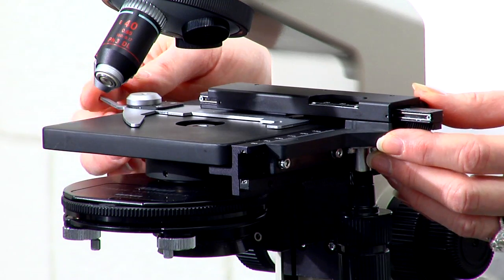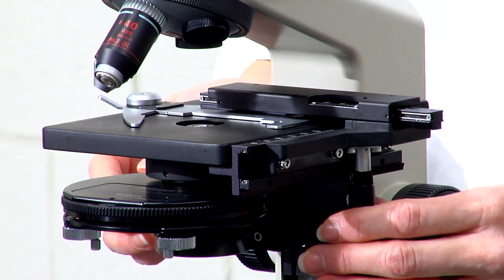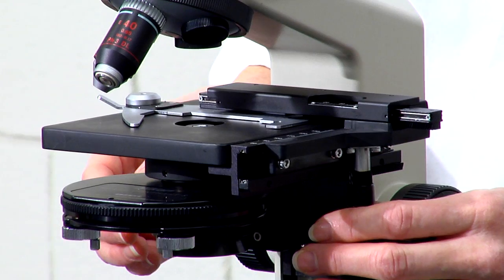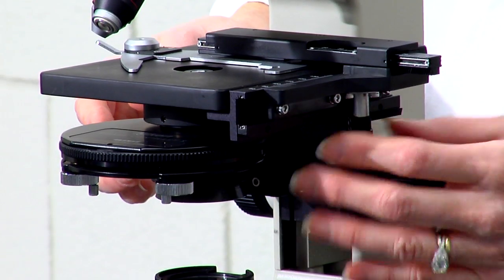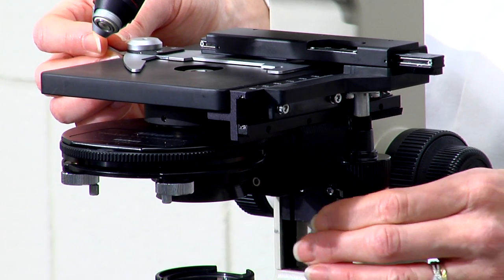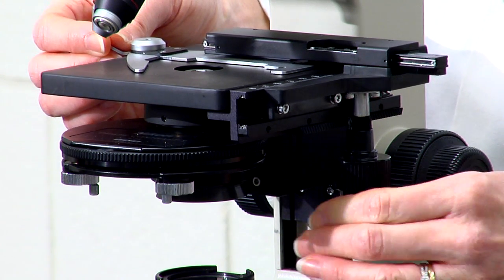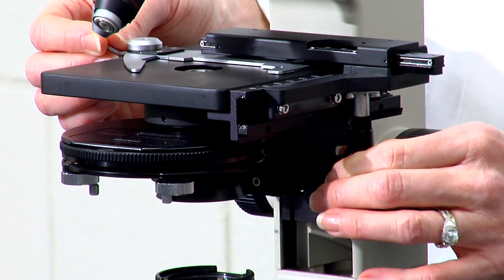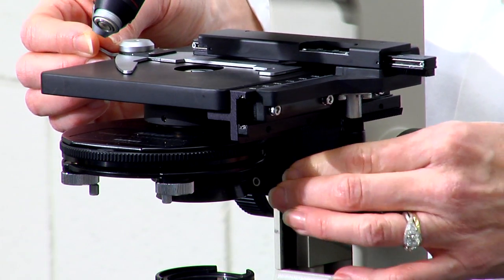Once the slide is secured in the clip, you can then move the slide back and forth using the mechanical stage dials, which hang down along the side. And they will move the microscope slide back and forth or forward and backwards.